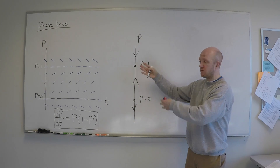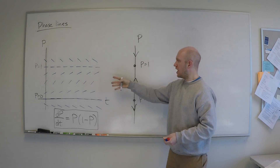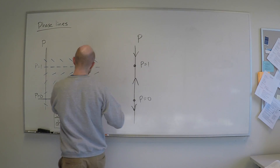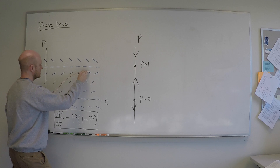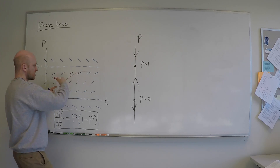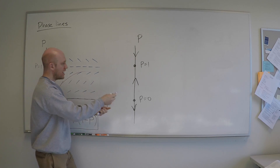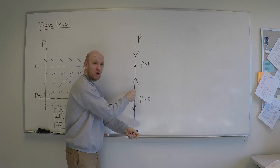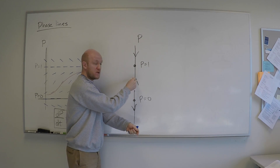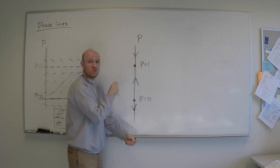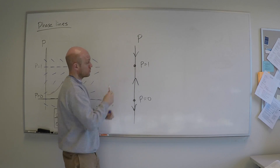The phase line contains basically all of the qualitative features that the slope field contains. Obviously I can't plot my solutions on the phase line, but you can imagine a solution going through the slope field as a little particle that, as time evolves, would move up along this phase line and head toward p equals 1, if you were watching an animation of the motion of that particle over time.